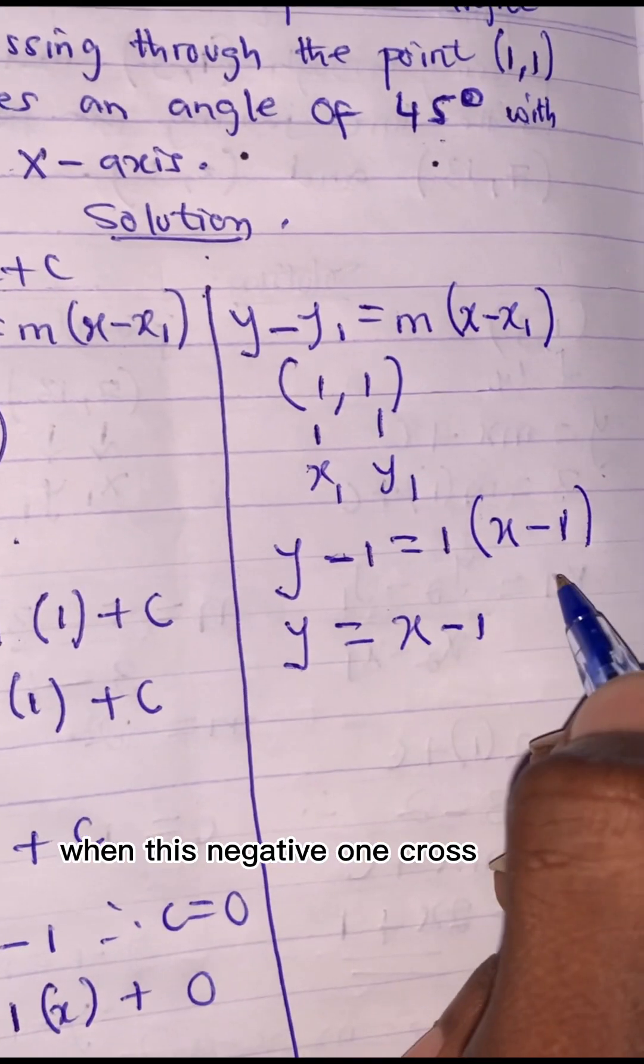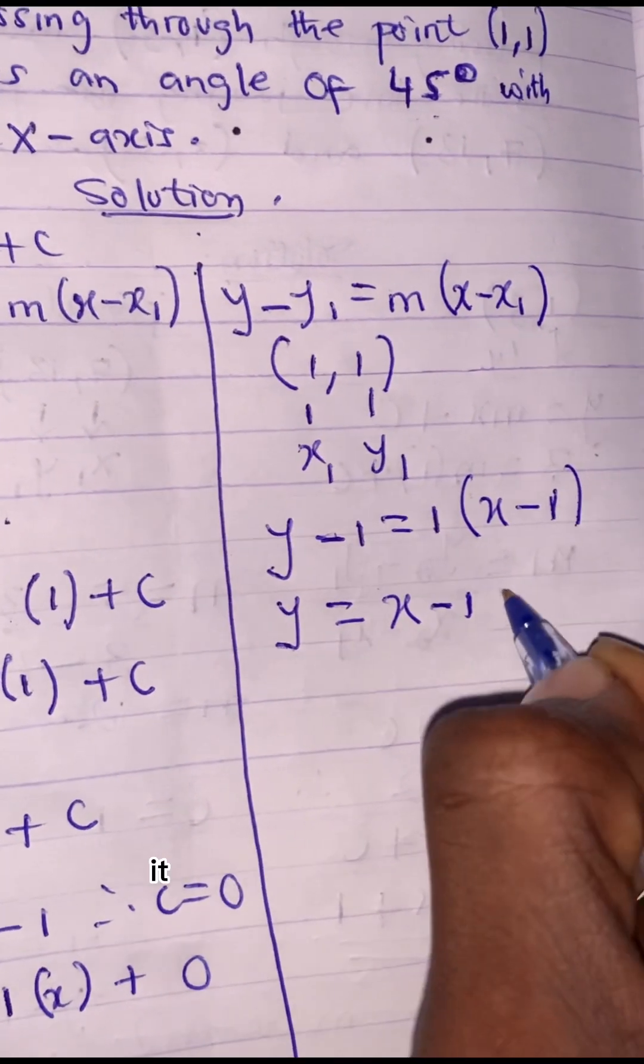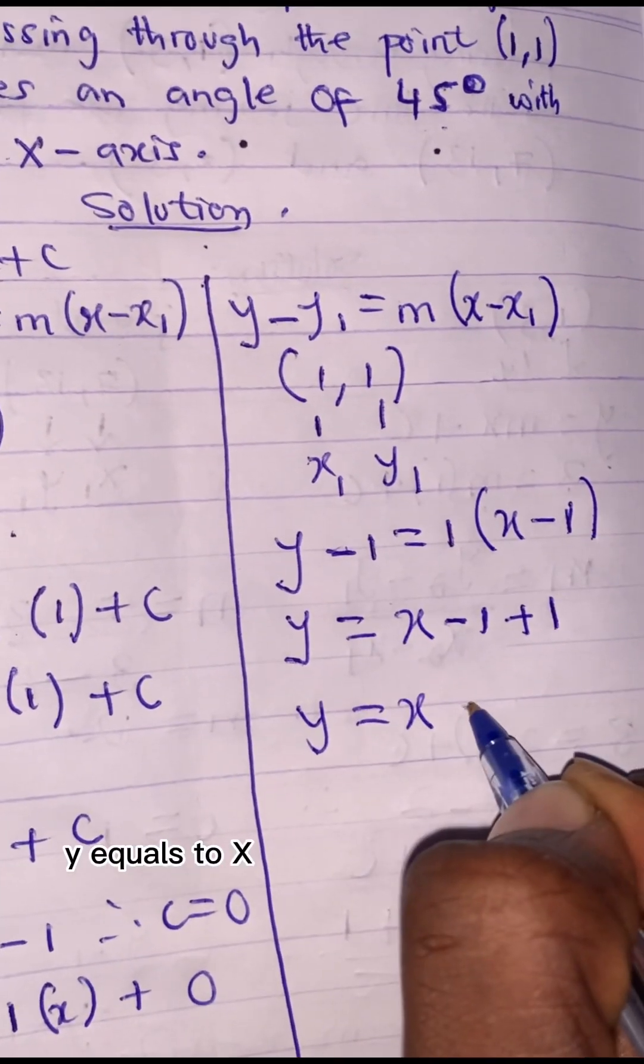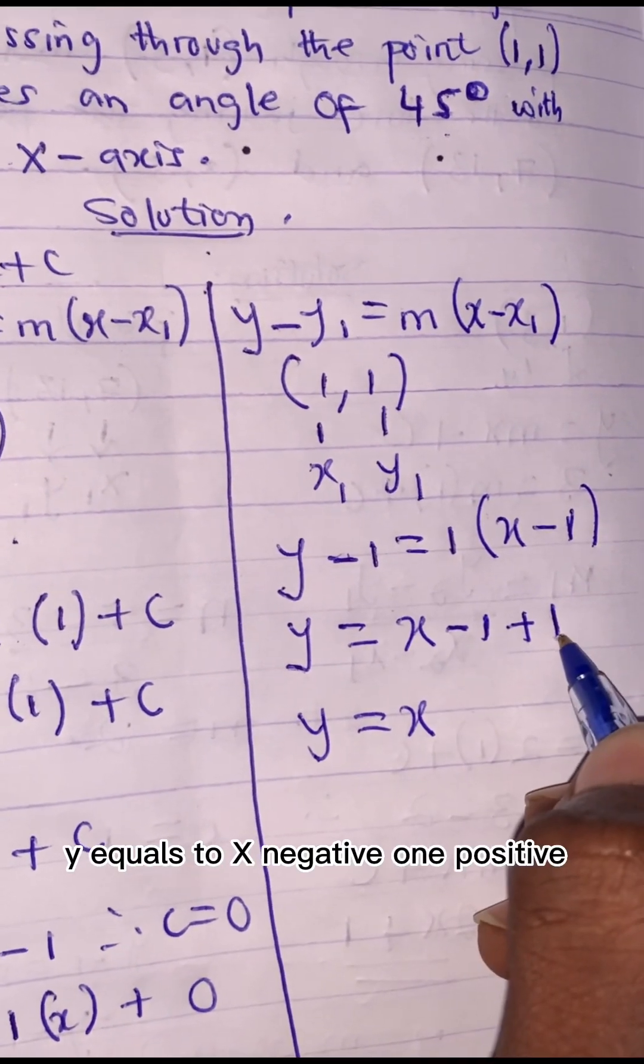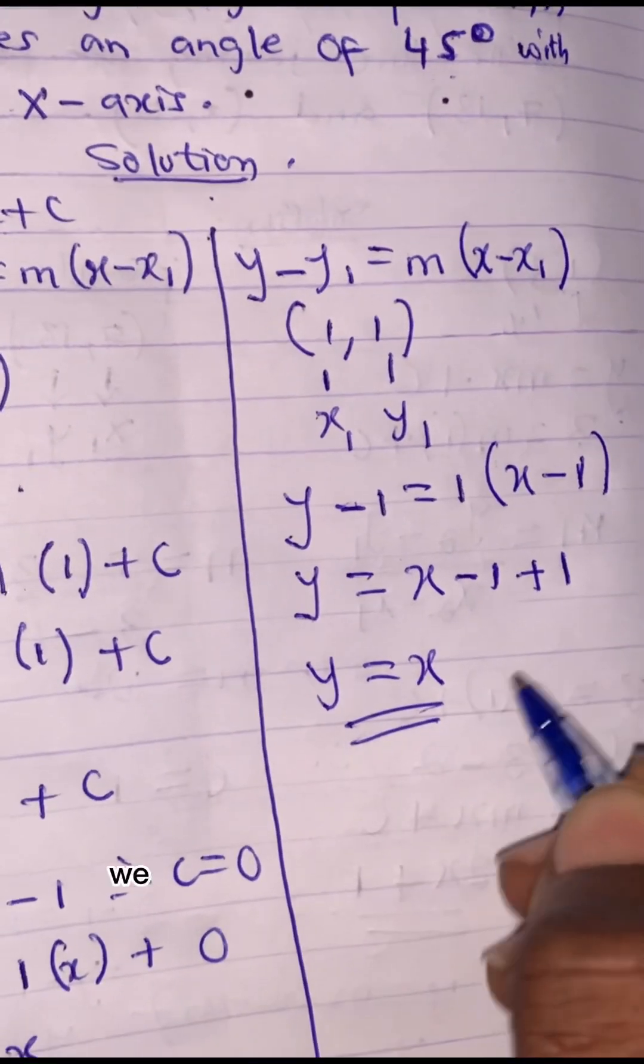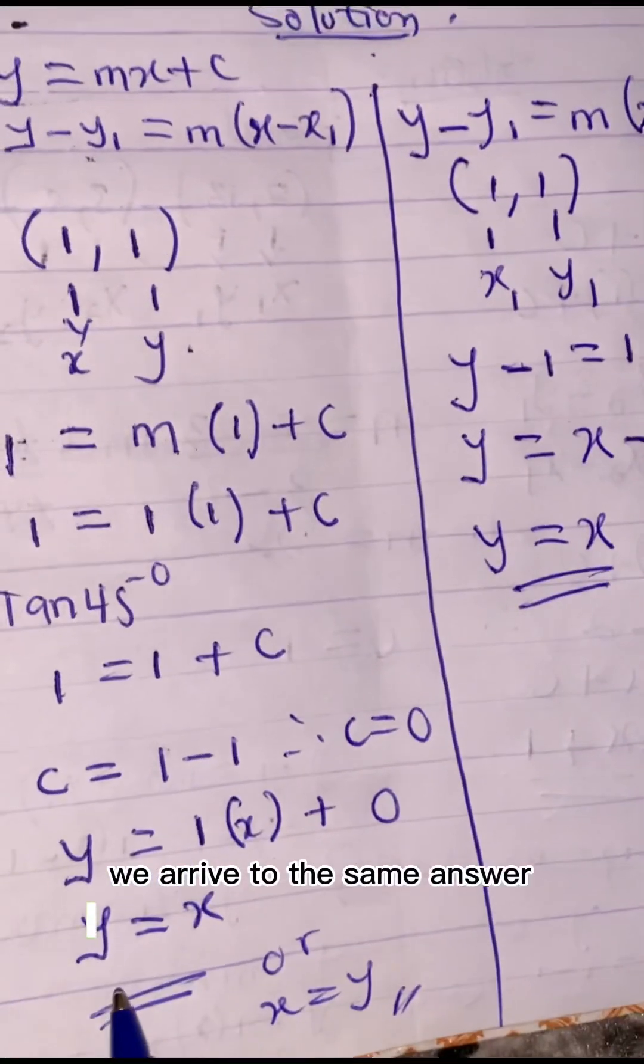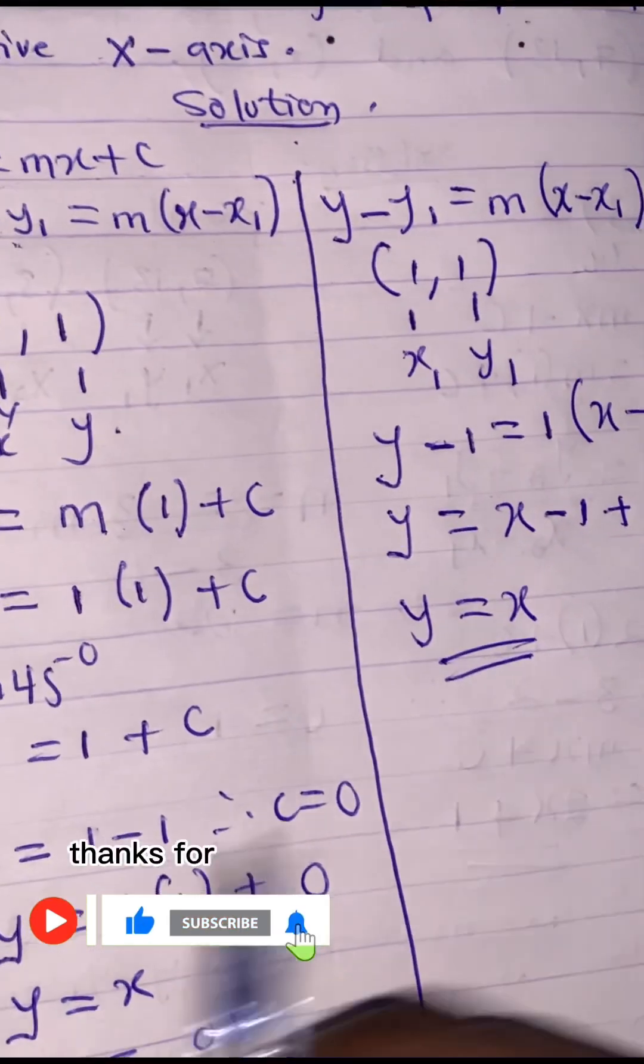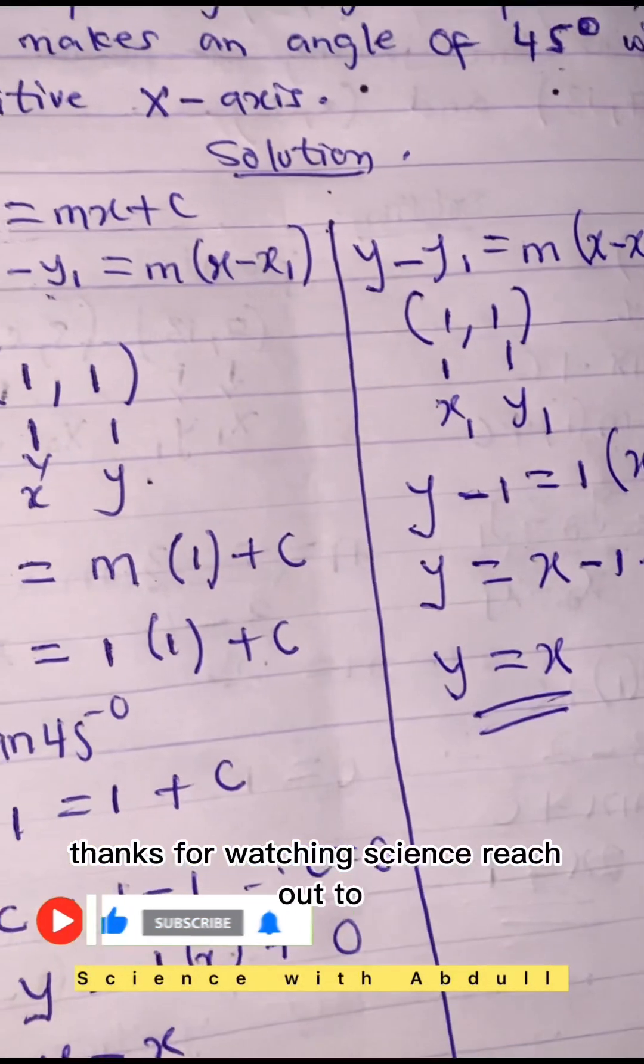When this negative 1 crosses to the equality sign, it would be positive 1. Y = x, negative 1, positive 1 is 0. So we arrive to the same answer, y = x. Thanks for watching, Science with Abdul.